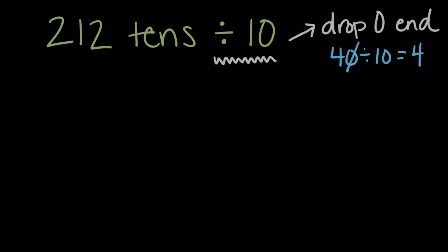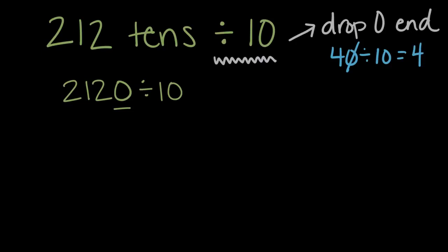Let's use that over here. We have 2,120 — two hundred twelve tens — so that's how we get the zero there. We divide that by ten. We can use this first pattern and just drop the zero on the end. Dropping that zero, our answer will be 212.